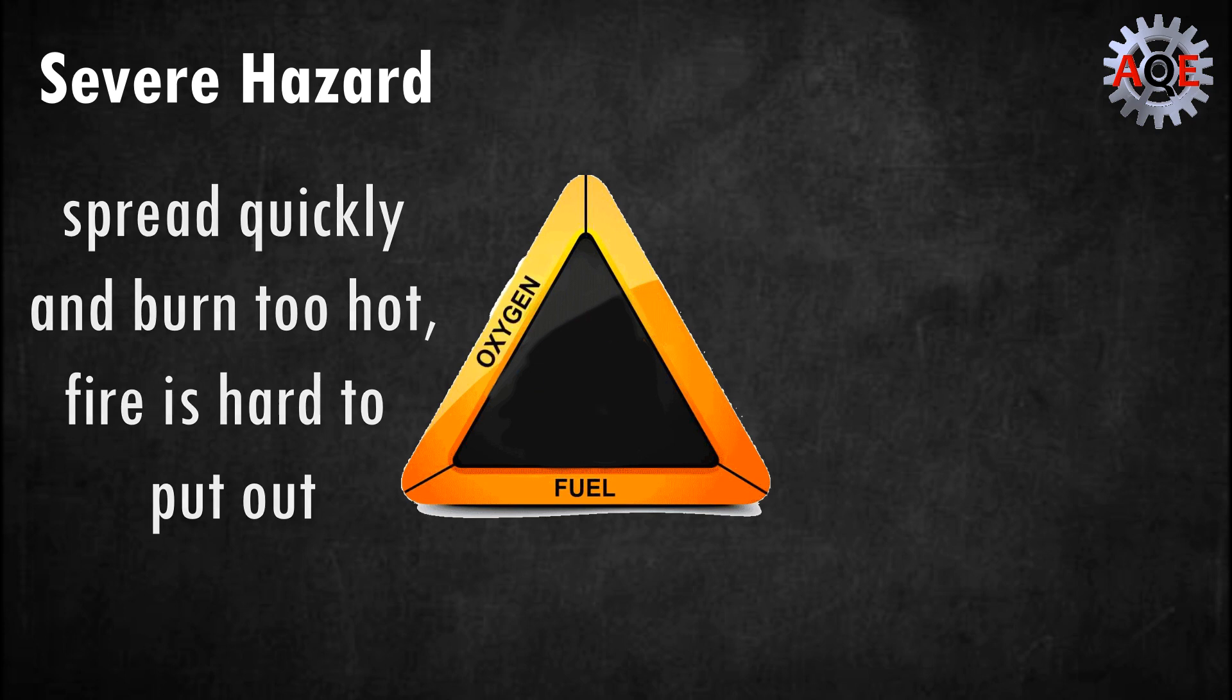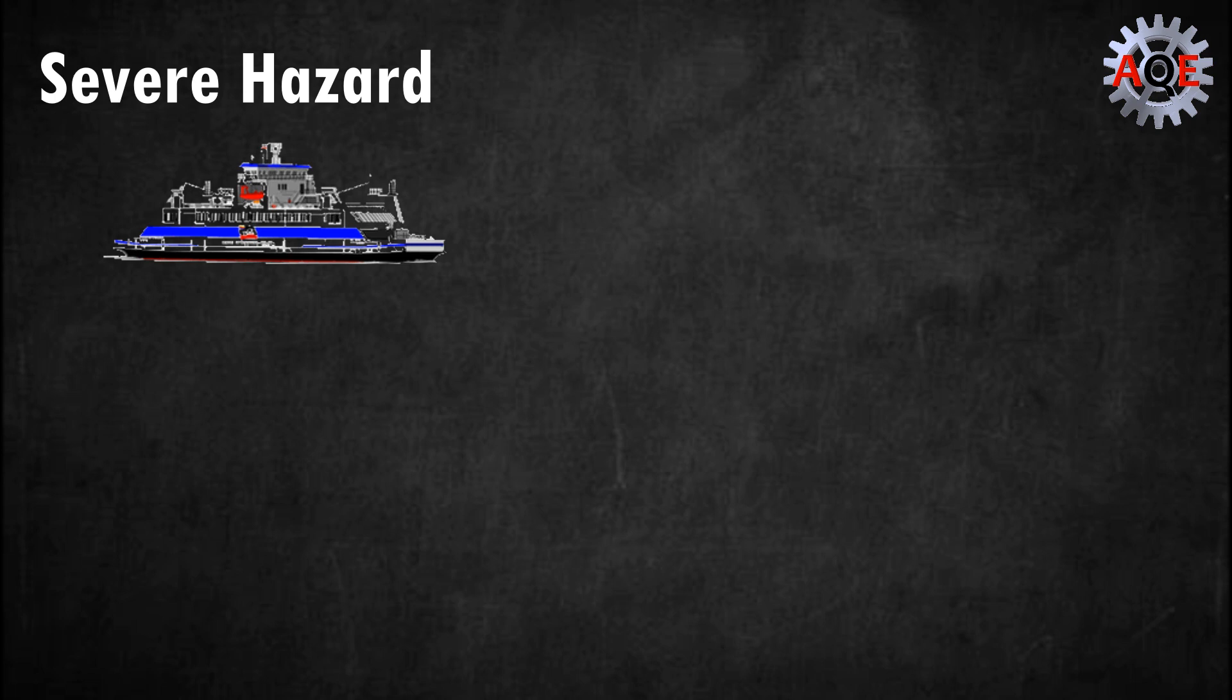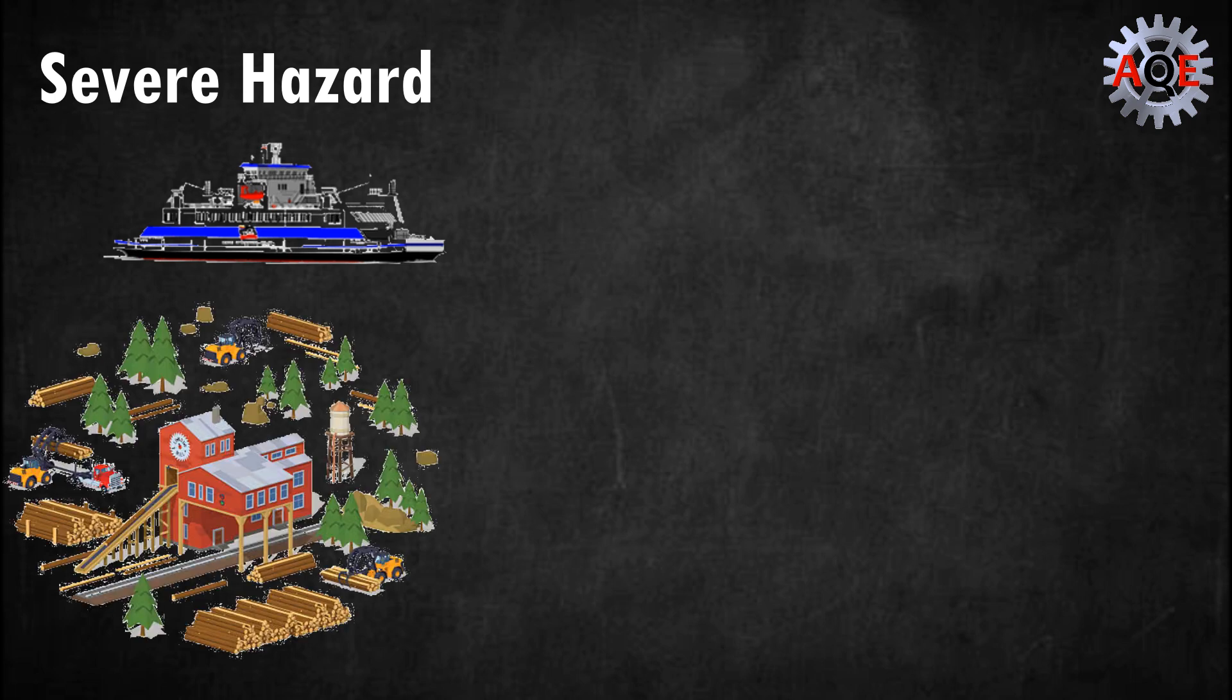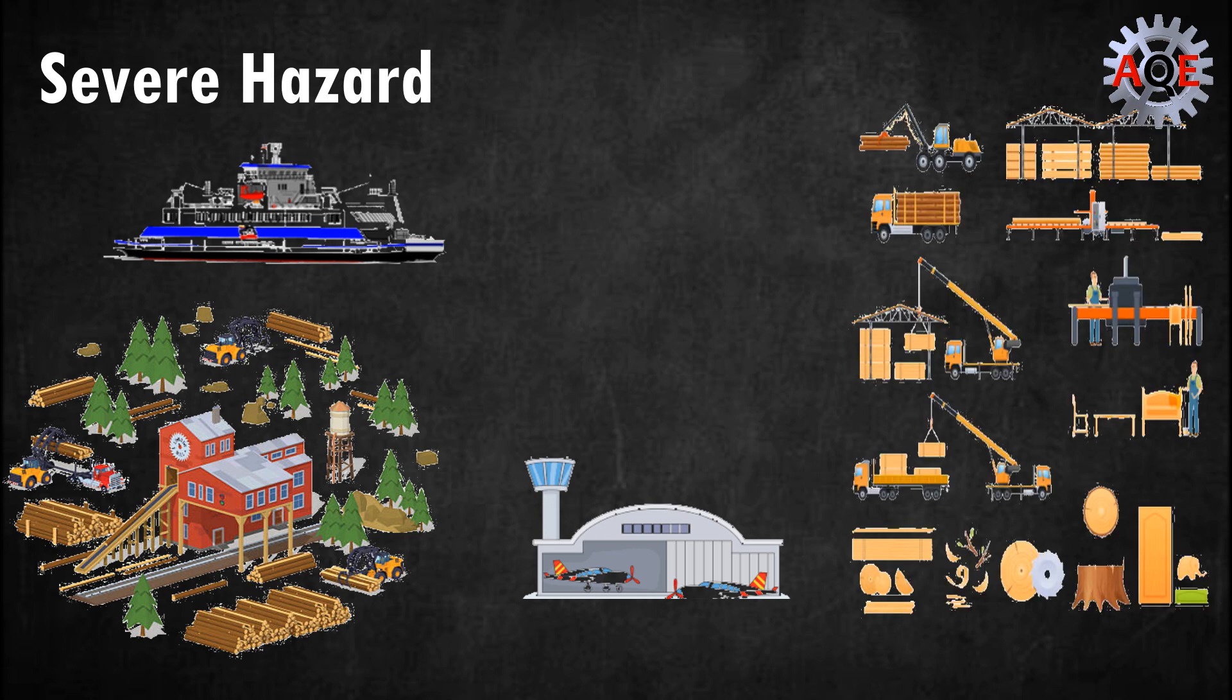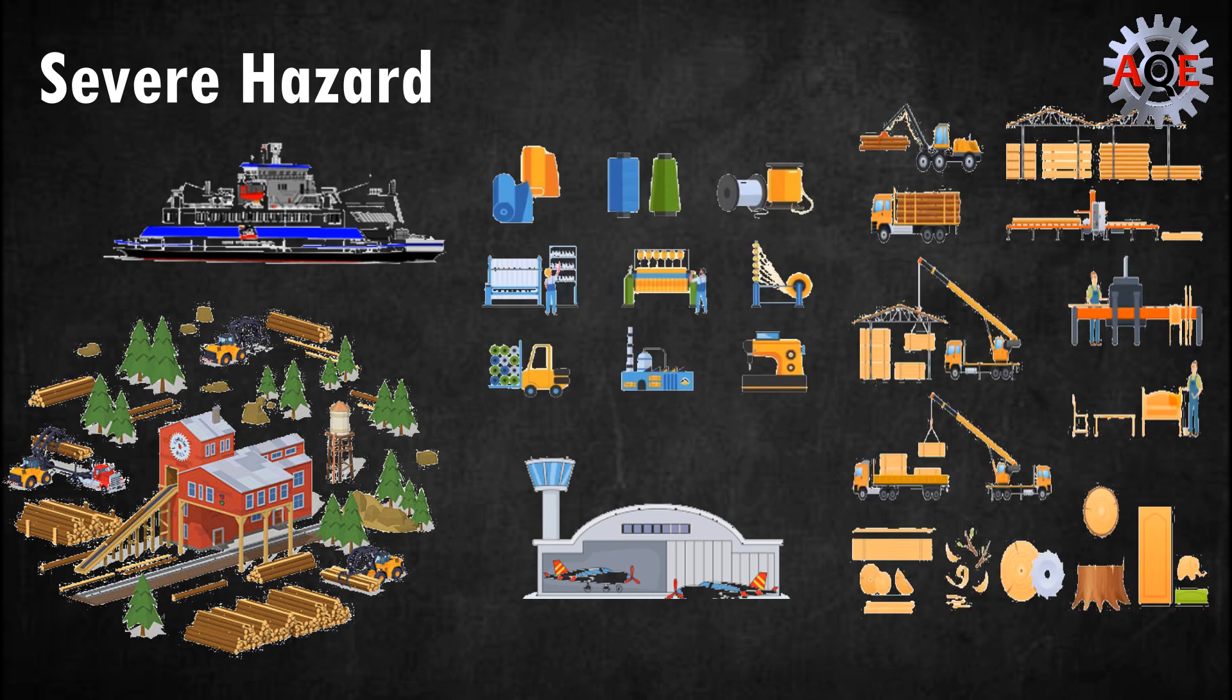Some of the buildings that commonly require the severe hazard fire sprinkler classification are boat or aircraft service terminals, storage warehouses, sawmills, metal extrusion factories, aircraft hangers, particle board and plywood production, rubber manufacturing, and textile manufacturing.